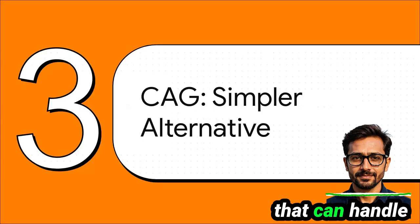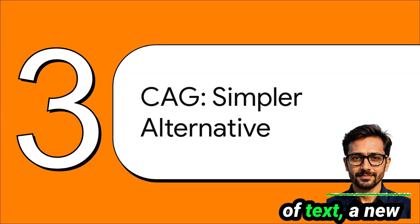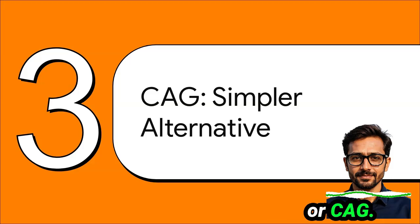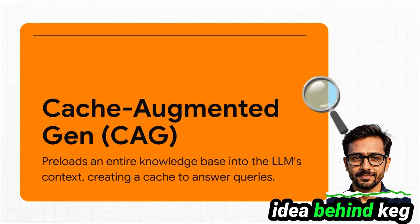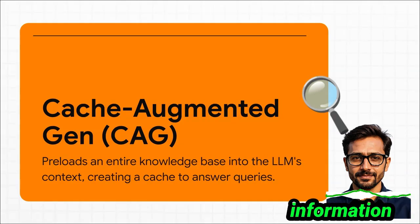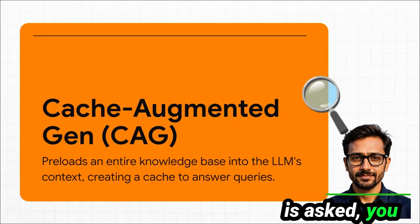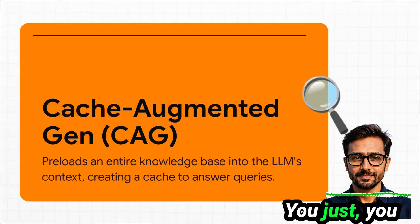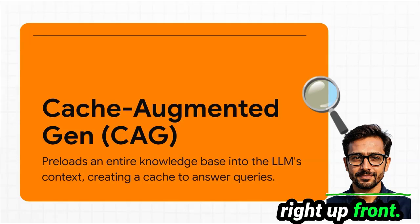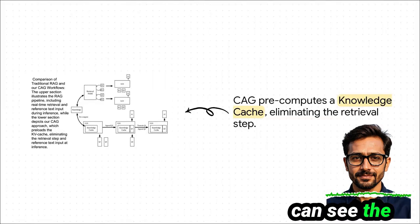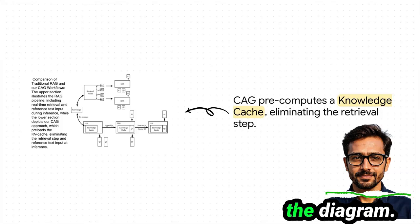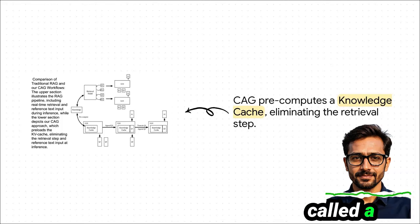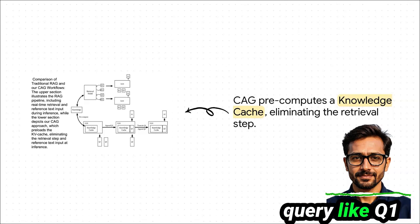But now, with these new models that can handle absolutely massive amounts of text, a new challenger has entered the ring: Cache Augmented Generation, or CAG. The whole idea behind CAG is just radically different. Instead of fetching information when a question is asked, you preload the entire knowledge base into the model's context window all at once — you feed the model everything right up front. The whole knowledge base is pre-computed into something called a knowledge cache. So now, when a query like Q1 comes in,